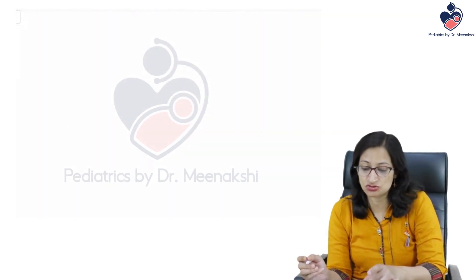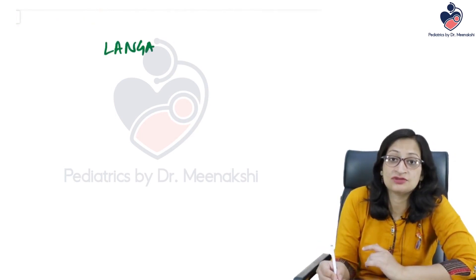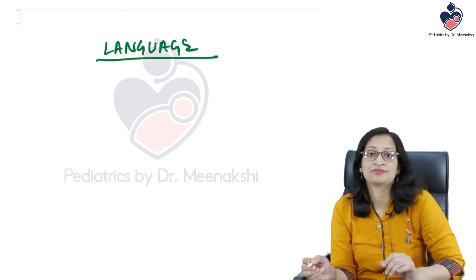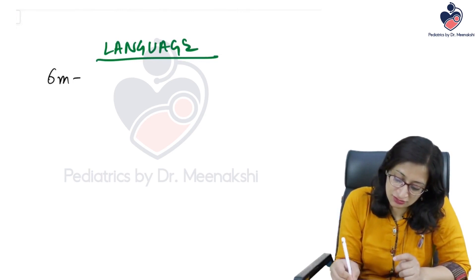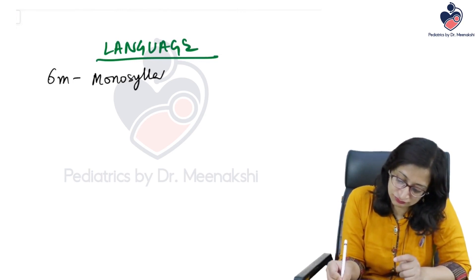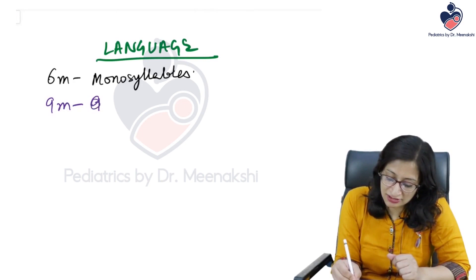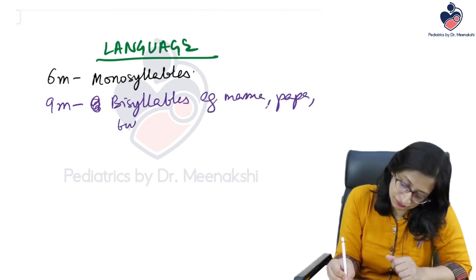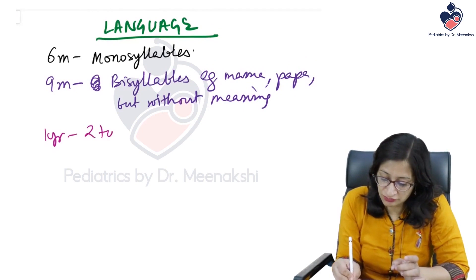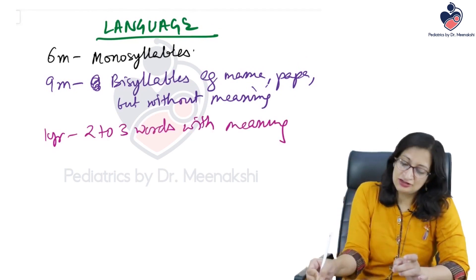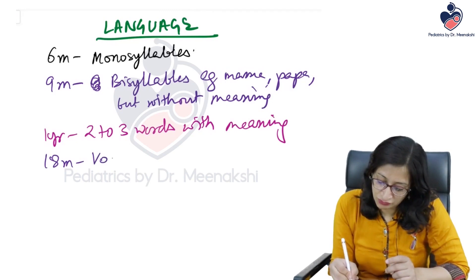Important language milestones: at six months, the child speaks monosyllables. At nine months, bisyllables but without meaning — for example, 'mama,' 'papa' without meaning. At one year, the child can speak two to three words with meaning. At eighteen months, the child has a vocabulary of ten words.